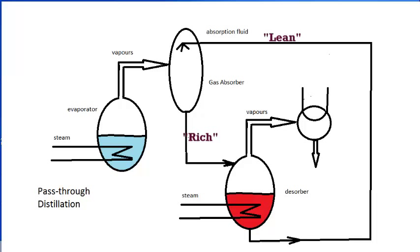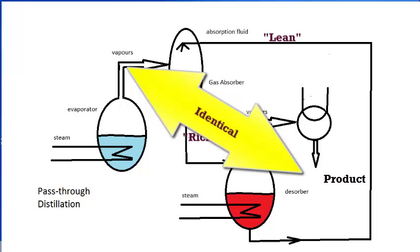The absorption fluid must be returned to its lean state by boiling out the absorbed material in a distillation apparatus called a desorber. The product coming from the desorber's condenser will be identical in volume and composition to the vapors originally generated in the evaporator.